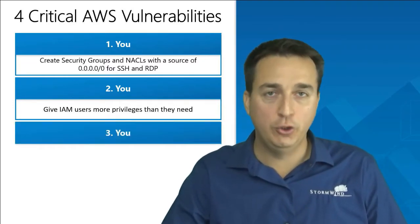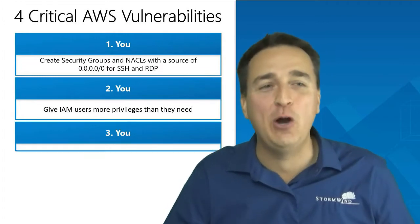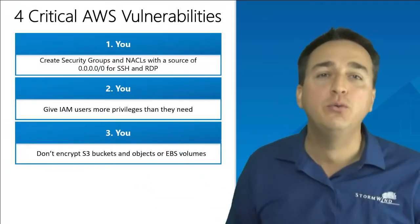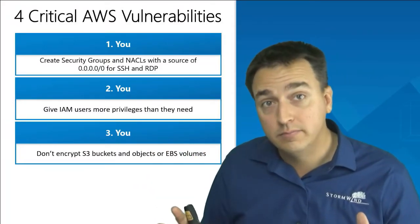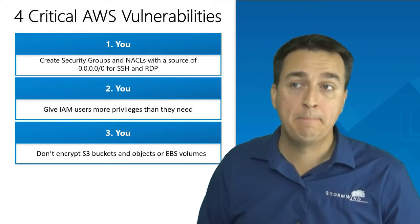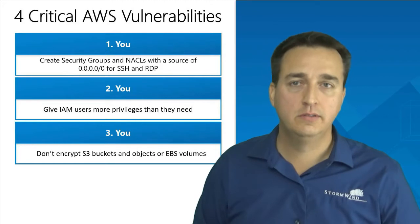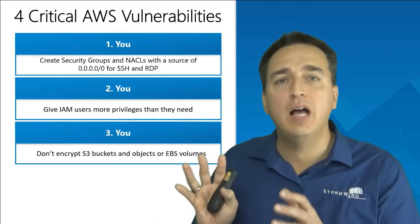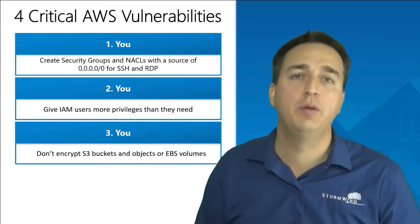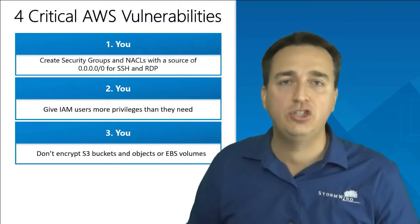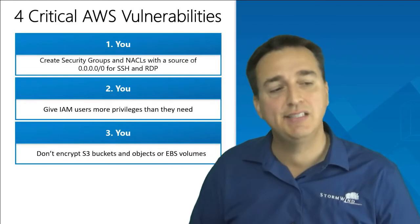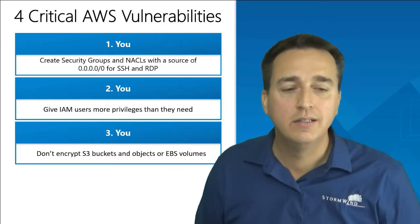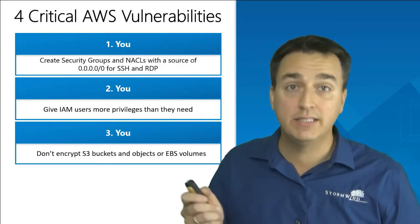Number three is also you. You don't encrypt S3 buckets, or the objects in those S3 buckets, or even your EBS volumes. What's going to happen is an unauthorized user accesses the buckets, objects, or EBS volumes and takes that information. And since it's not encrypted, they can easily read it — it's in plain text. That is a vulnerability and it needs to be solved.